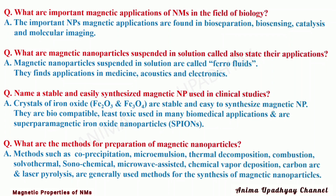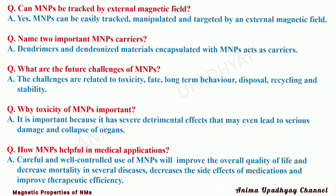What are the methods for preparation of magnetic nanoparticles? Methods such as co-precipitation, micro-emulsion, thermal decomposition, combustion, solvothermal, sonochemical, microwave-assisted, chemical vapor deposition, carbon arc, and laser pyrolysis are generally used methods for the synthesis of magnetic nanoparticles.